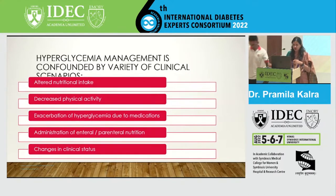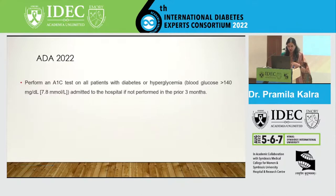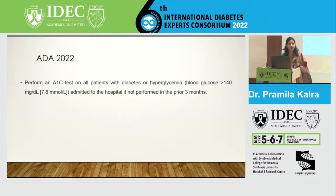Whenever a patient is admitted for any procedure or surgery, we need to have an HbA1c test done, because anybody having a glucose value beyond 140 demands that we check. In our hospital, anyone beyond 100, it's always better to check to be sure, because post-op complication rates may be much higher if we don't take care of glucose pre-operatively.